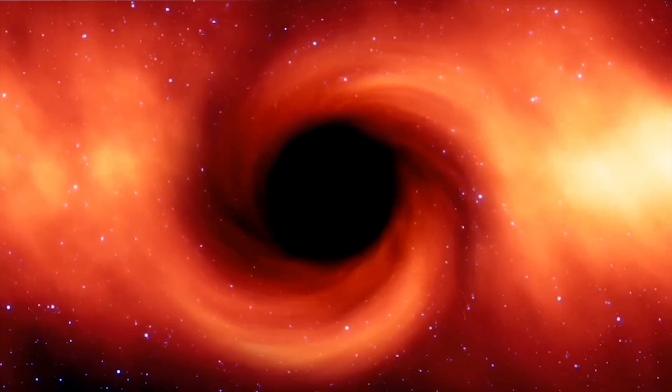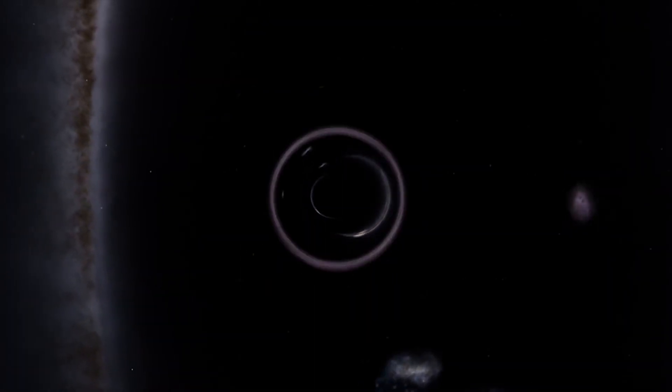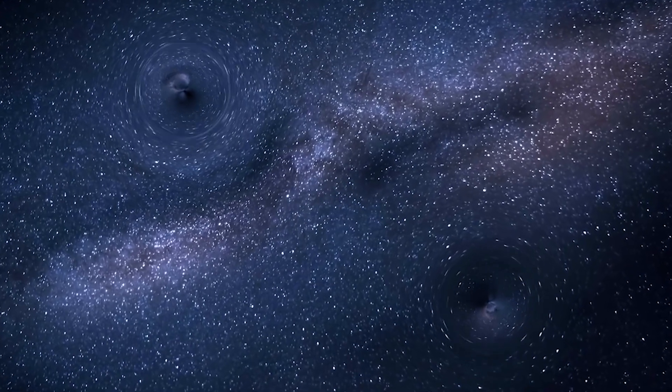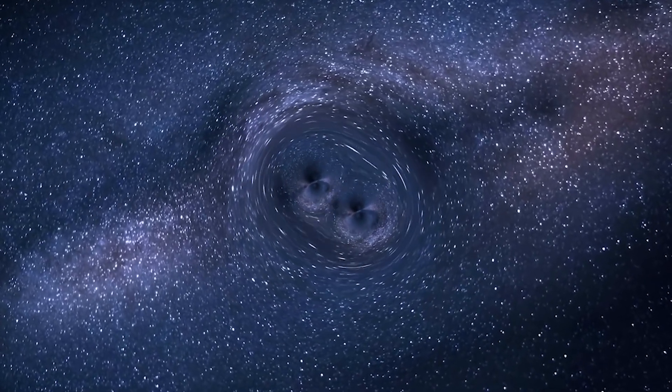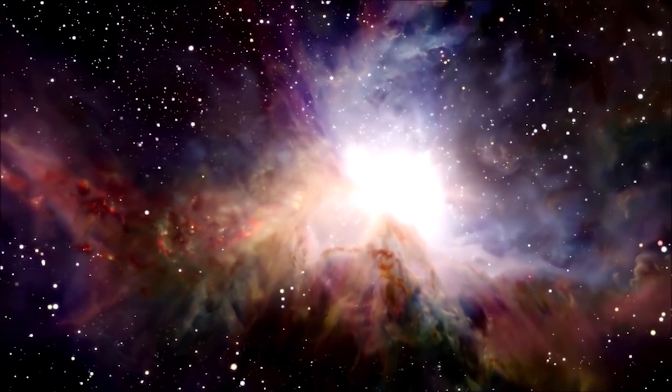By carefully observing the gravitational lensing effect caused by TON 618, astronomers can gather information about the mass, shape, and distribution of matter in and around the black hole. This technique allows them to indirectly study TON 618's properties and gain insights into the nature of supermassive black holes.